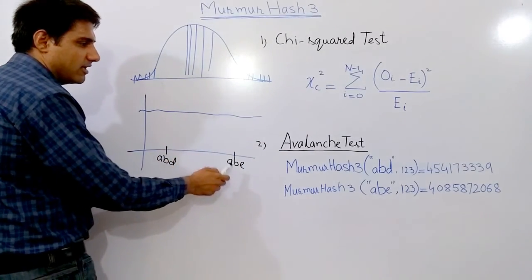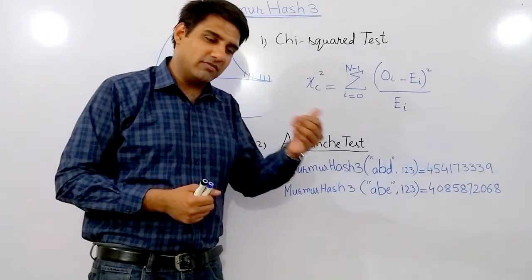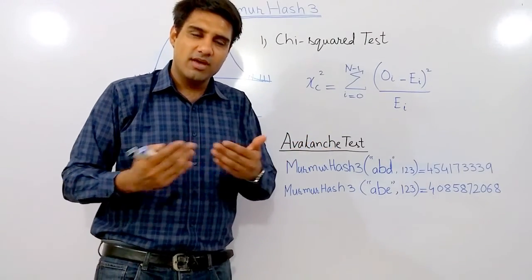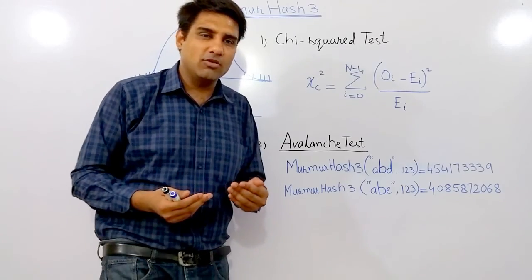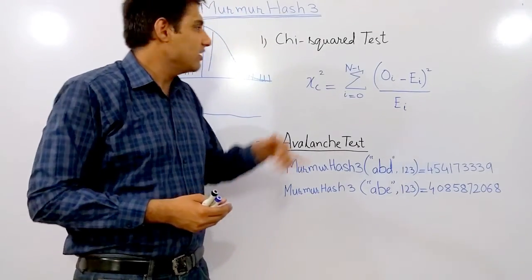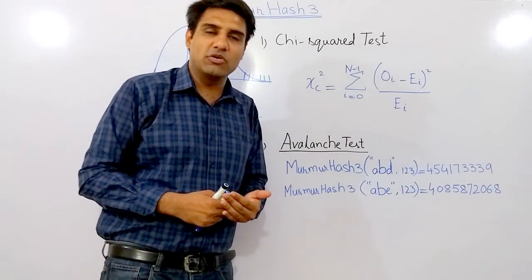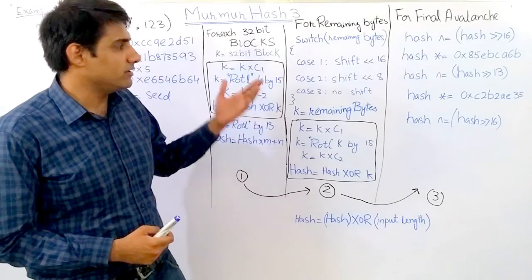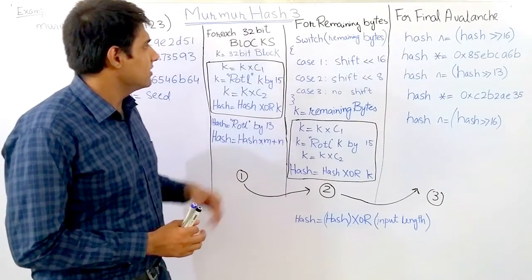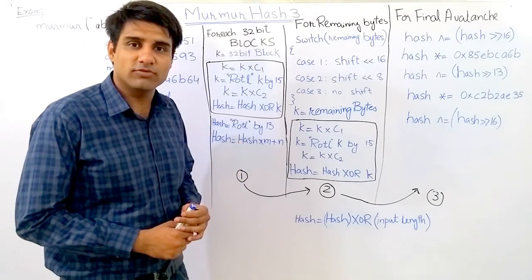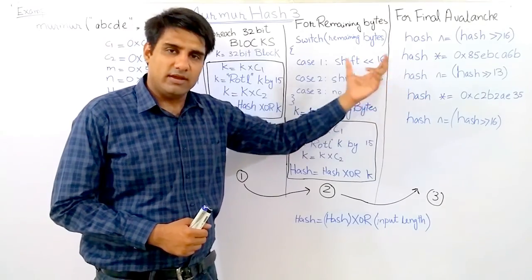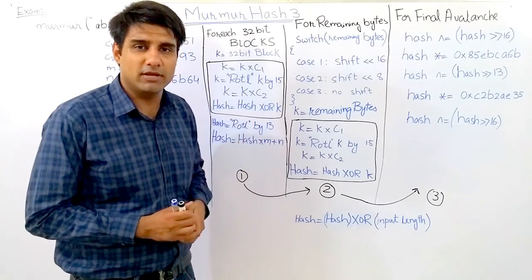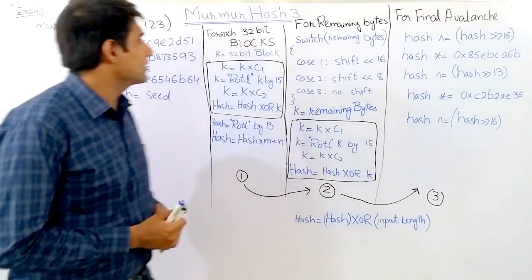Murmur Hashing is considered one of the most accurate and efficient hash functions currently used in lookup-based applications. It passes both the chi-square test and the avalanche test, and is therefore considered a good hash function. The hash algorithm is written in three parts: the first is for processing 32-bit blocks, the second is for the remaining bytes, and the third applies finalization steps on all the bytes.